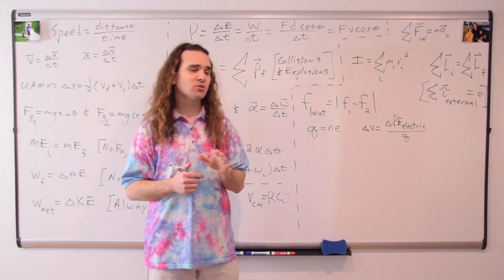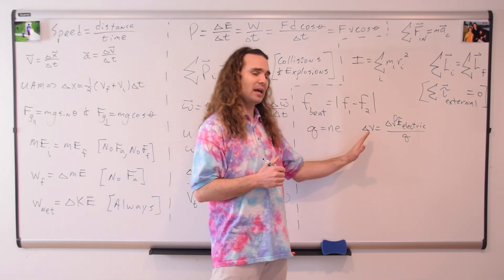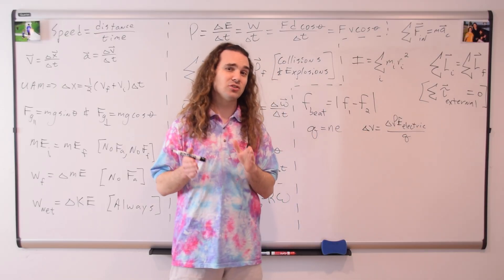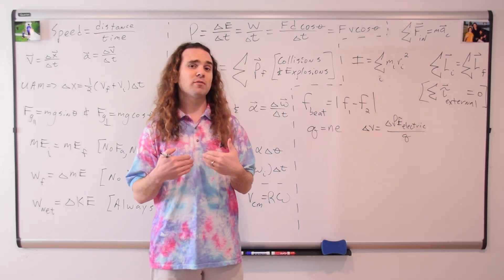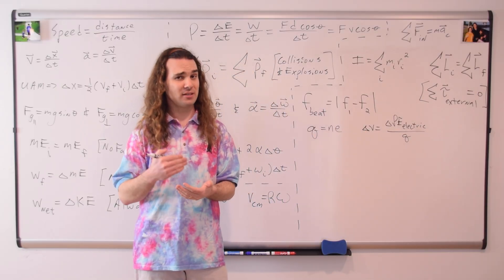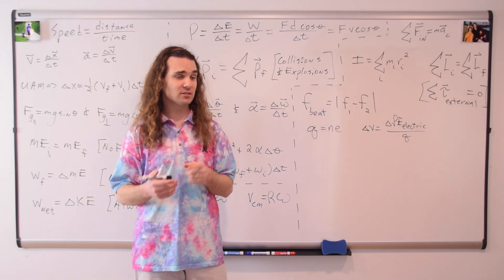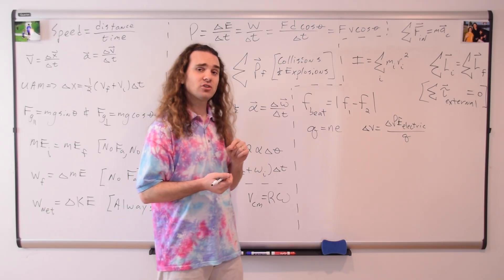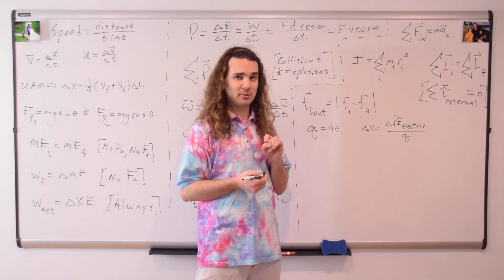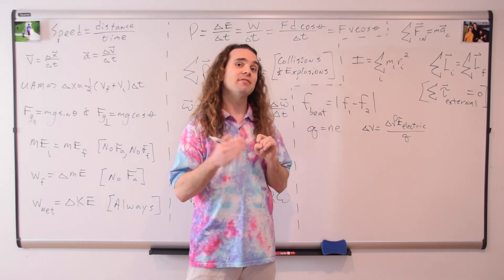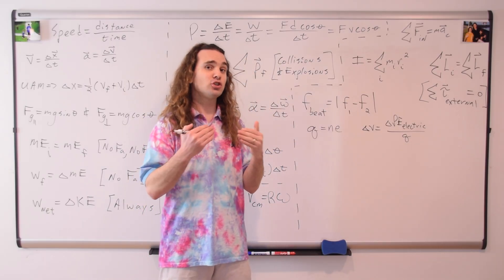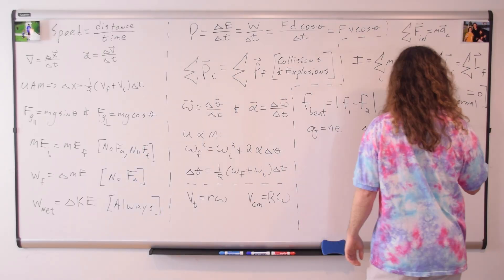In AP Physics 1, you use electric potential difference primarily in circuits. However, you do need to understand what electric potential difference is. Electric potential difference is the change in electric potential energy of a charge divided by the charge of that charge.